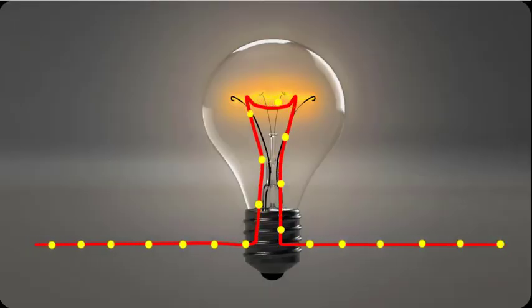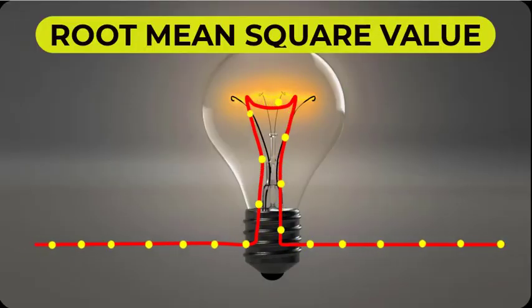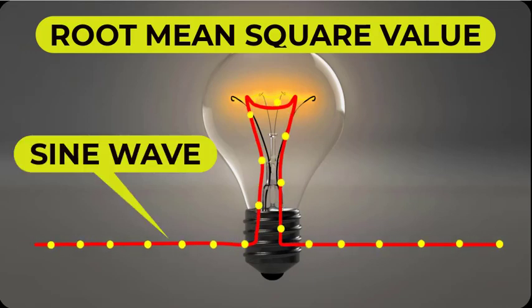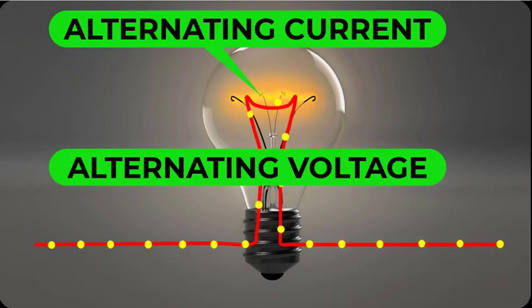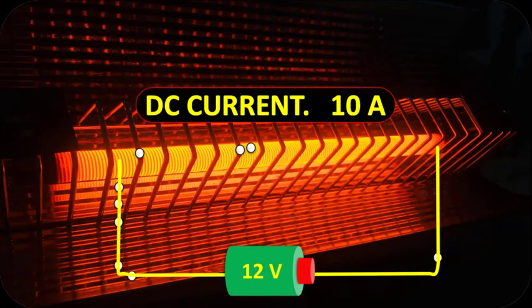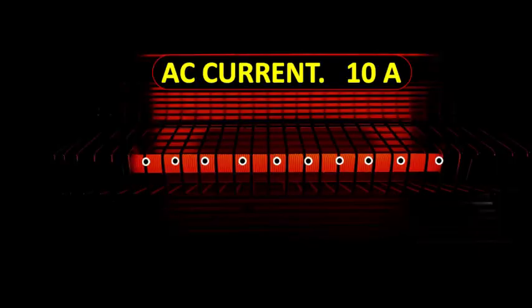Hi guys, in this video I am going to show you the root mean square value of a sine wave, such as alternating current or voltage. A 10 ampere DC current produces more heat as compared to a 10 ampere AC current.